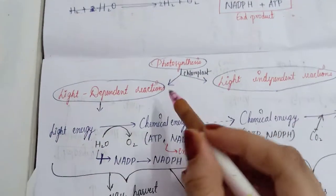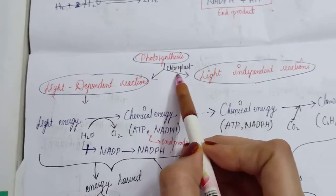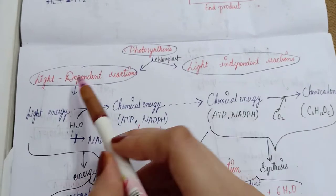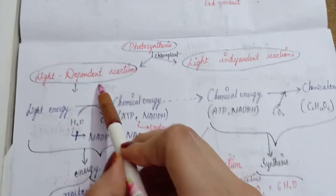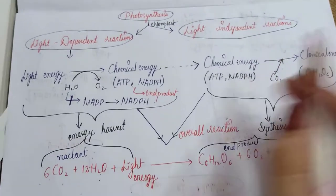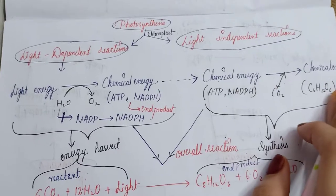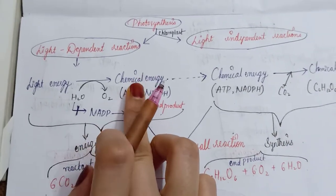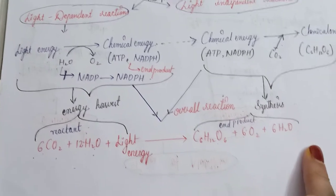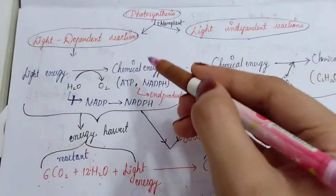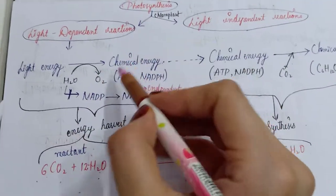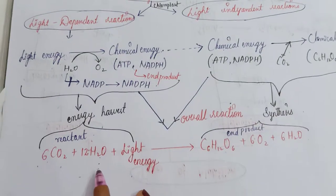This information recaps that photosynthesis occurs in the chloroplast and takes place in two phases: the light-dependent reaction, also called the light reaction, and the light-independent reaction, also called the dark reaction. This is our overall reaction — expressed in words as well as in a chemical equation. Both express the same thing — one in English wording and one in chemical equation form.